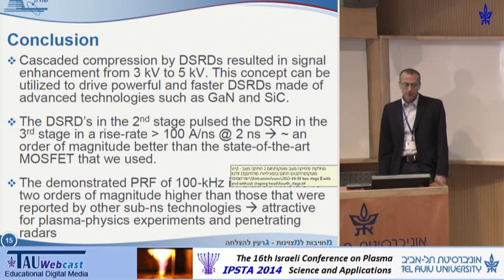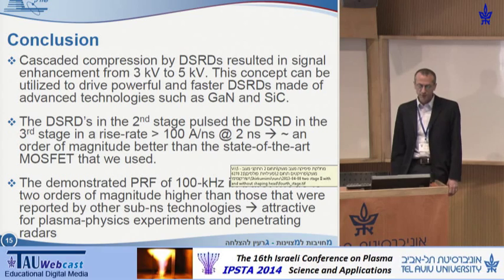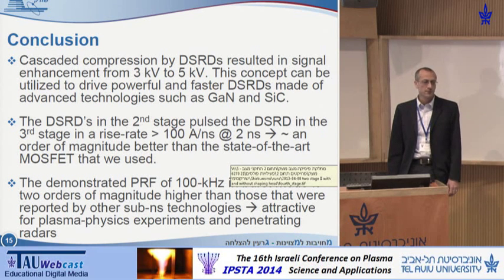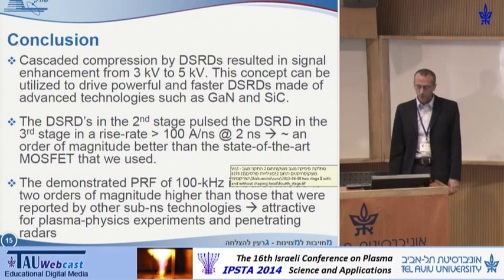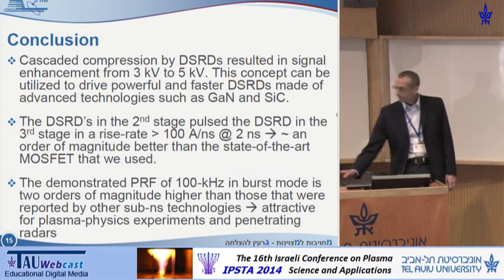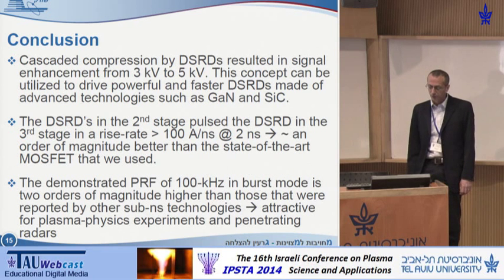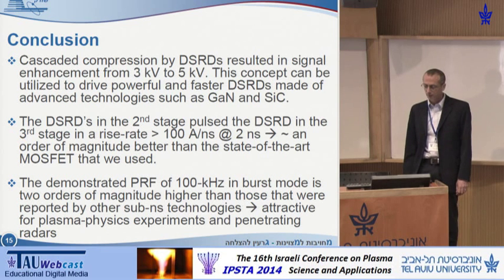To conclude: cascaded compression by DSRDs resulted in signal enhancement from 3 to 5 kilovolts, and this concept can be utilized to drive more powerful and faster DSRDs made of advanced technologies such as gallium nitride and silicon carbide. The DSRDs in the second stage drove the third-stage DSRD at over 100 amps per nanosecond in 2 nanoseconds — an order of magnitude better than the state-of-the-art MOSFET used. The demonstrated 100 kilohertz repetition rate in burst mode is two orders of magnitude better than other reported sub-nanosecond technologies, making this circuit attractive for plasma physics experiments and penetrating radars.